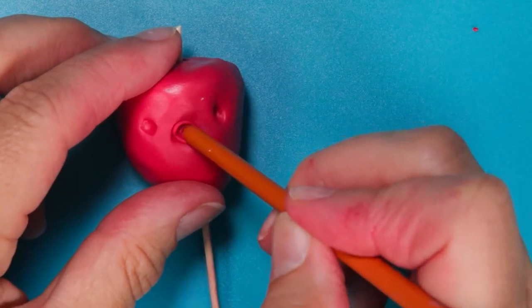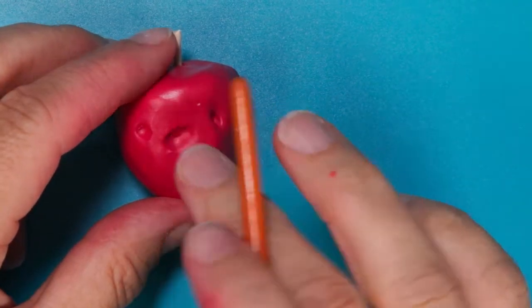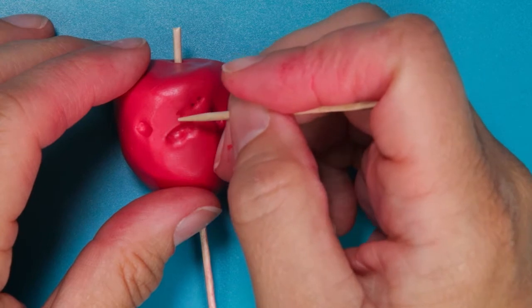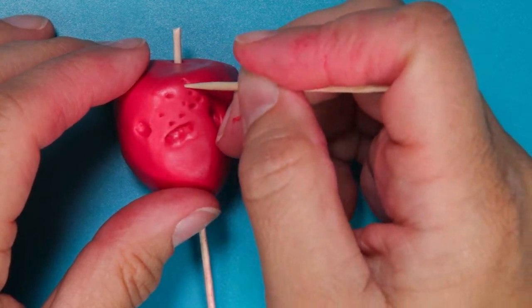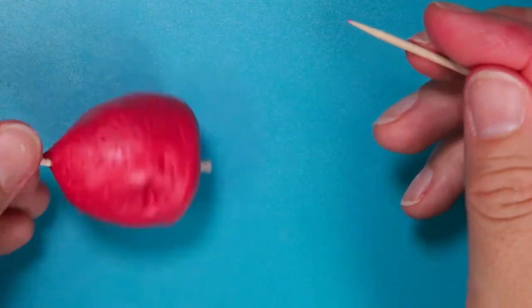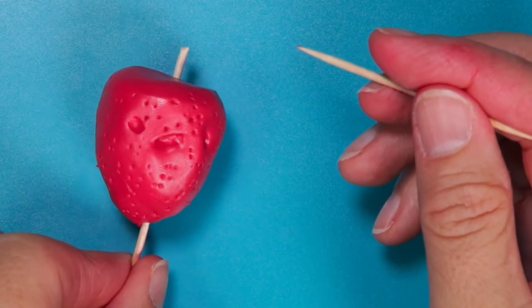You can also use the end of the paintbrush to kind of smooth out the clay. Grab your toothpick and add texture all around the strawberry. You don't want to push too hard and also not too light, just get it to the point where you feel like you can see those little divots that you find in an actual strawberry.